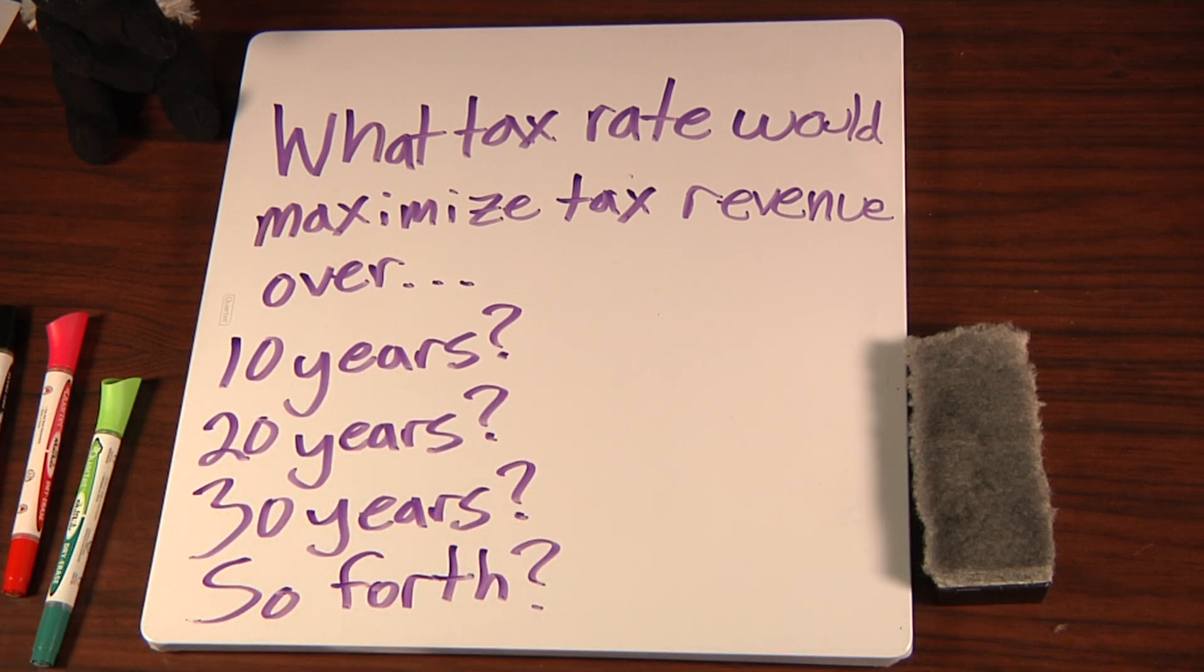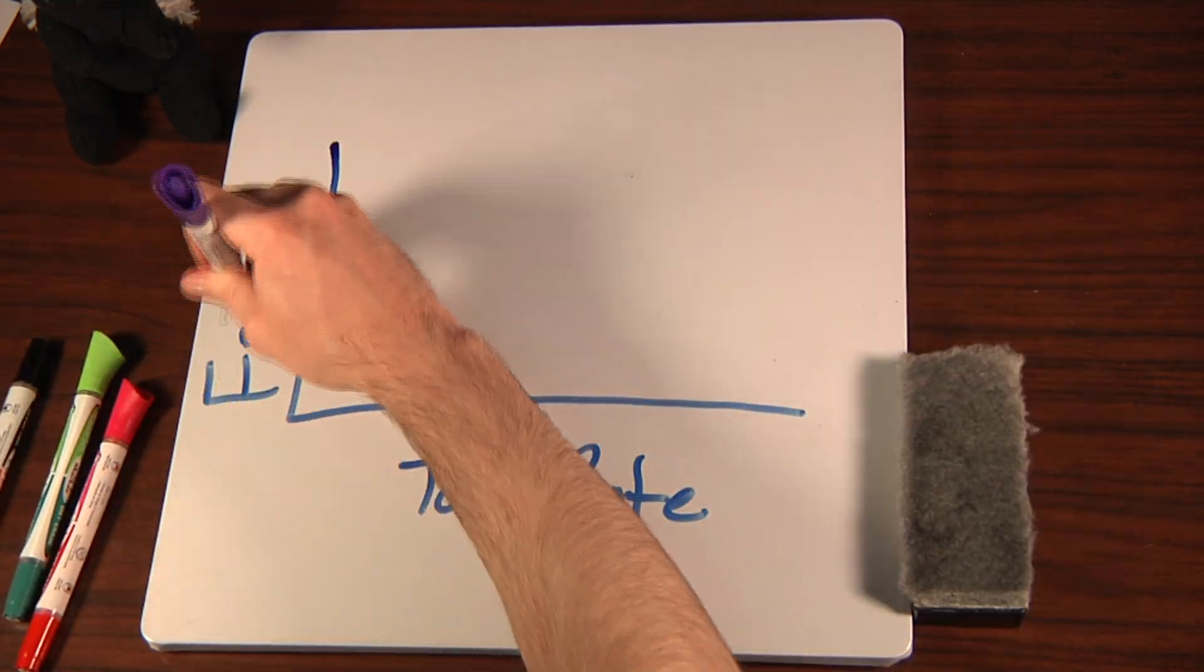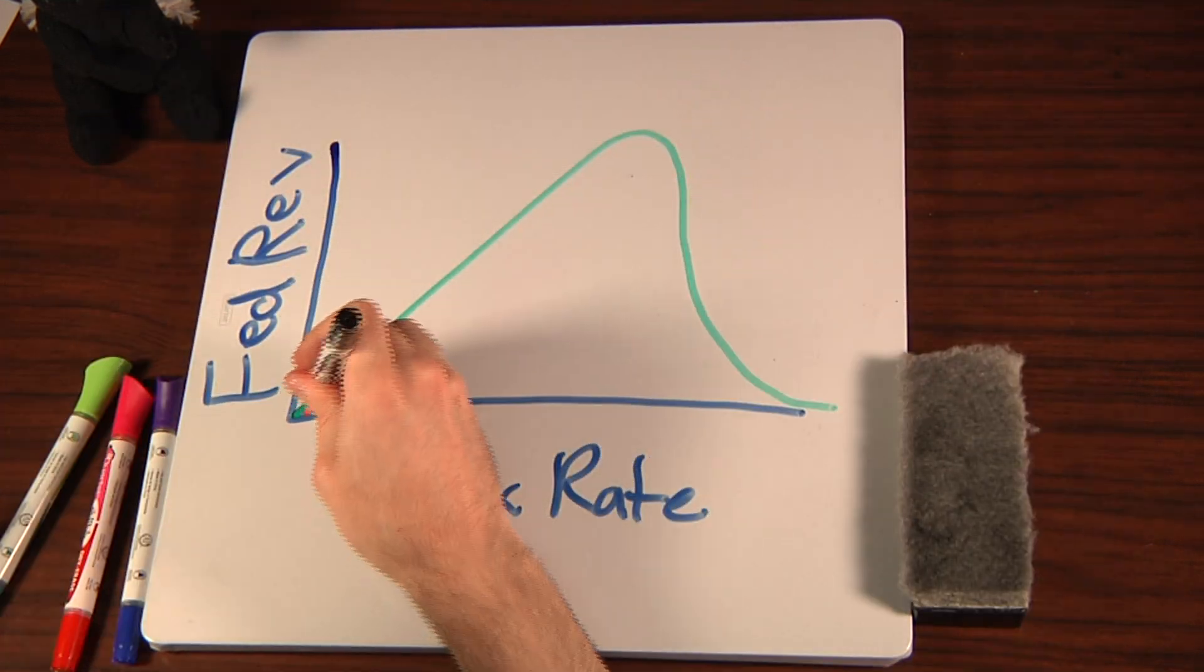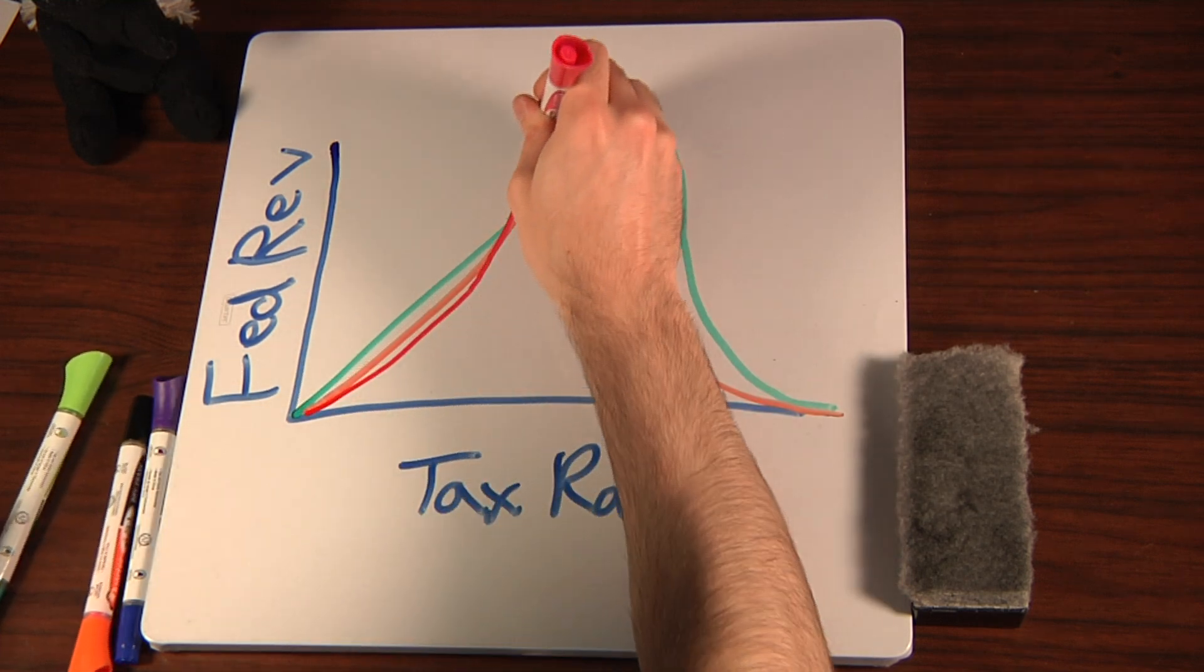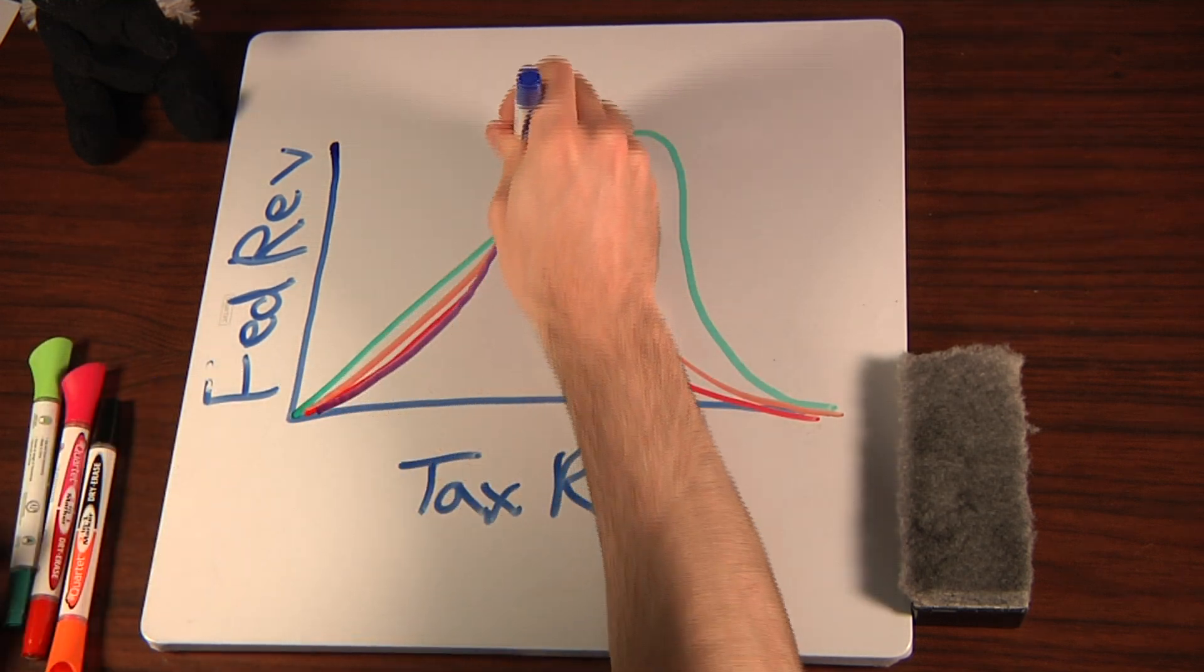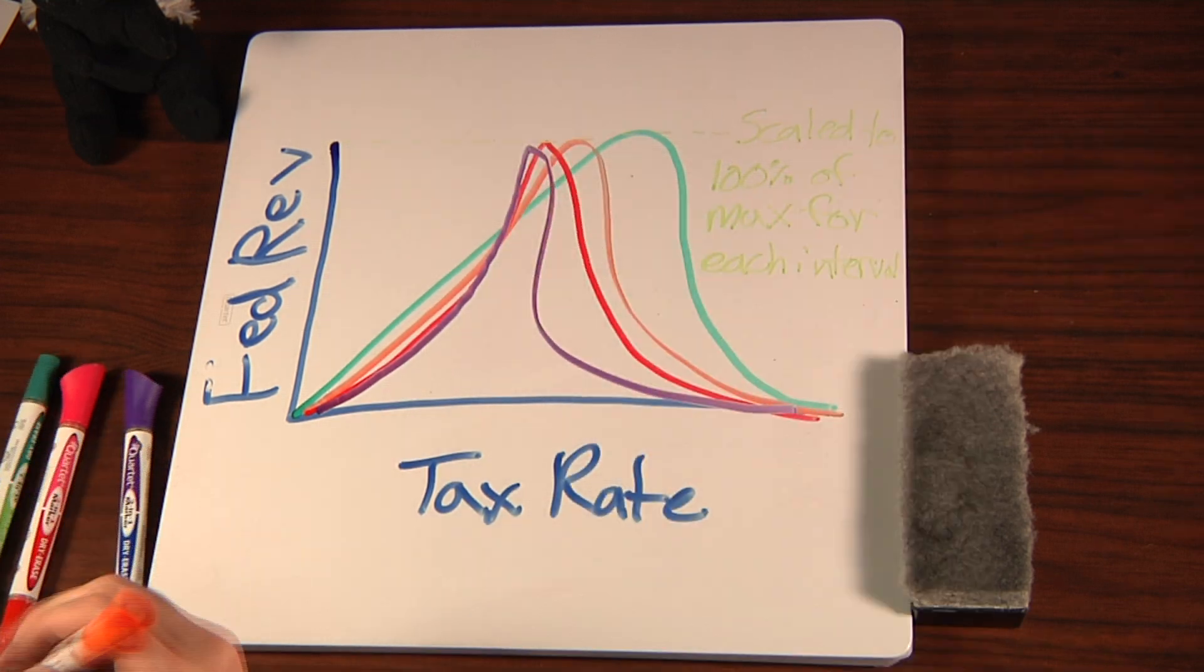Well, the longer time frame you have to work with, the more growth becomes a major determining factor of how much tax can be collected. So this might be the curve for 10 years, this for 20, and so on. With longer and longer intervals, each tax maximizing point moves closer and closer toward the growth maximizing rate.